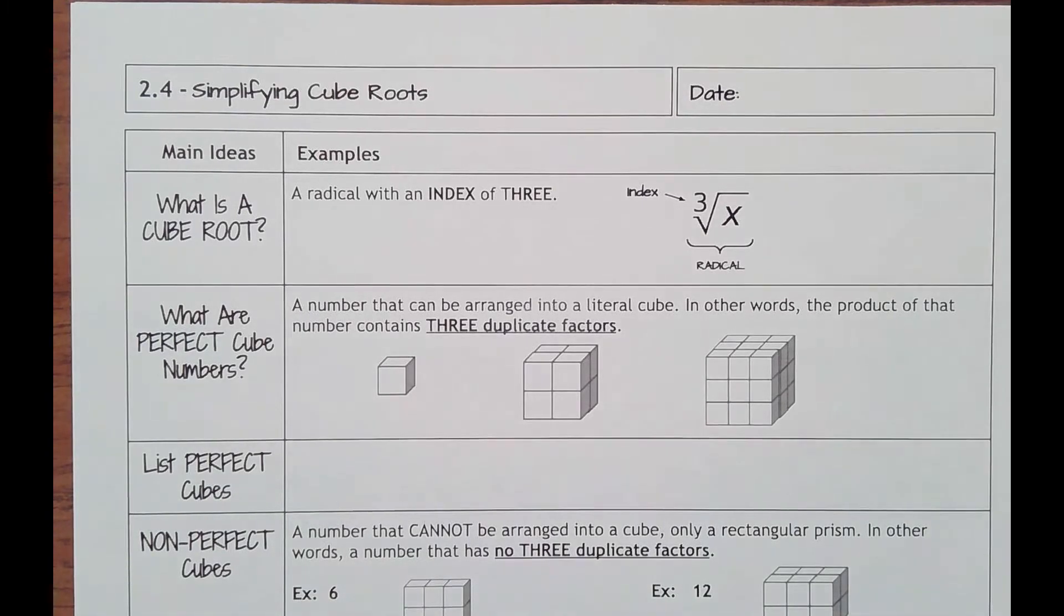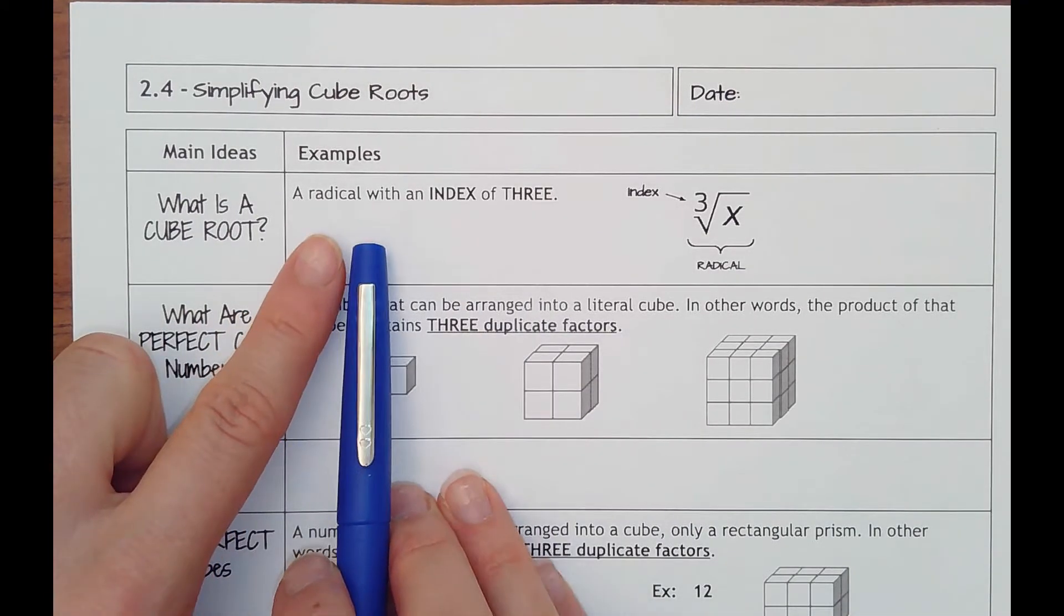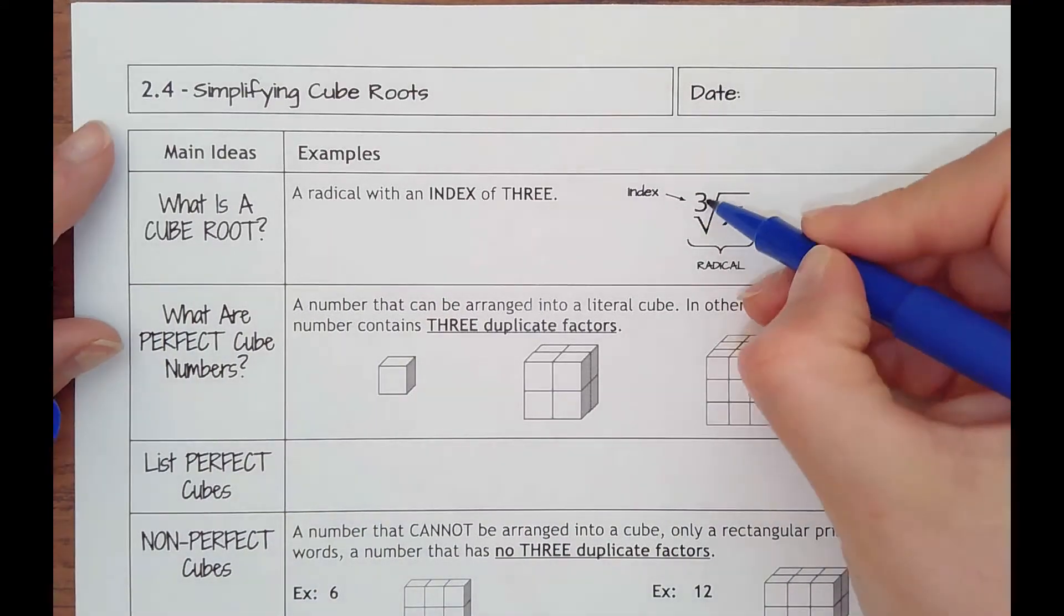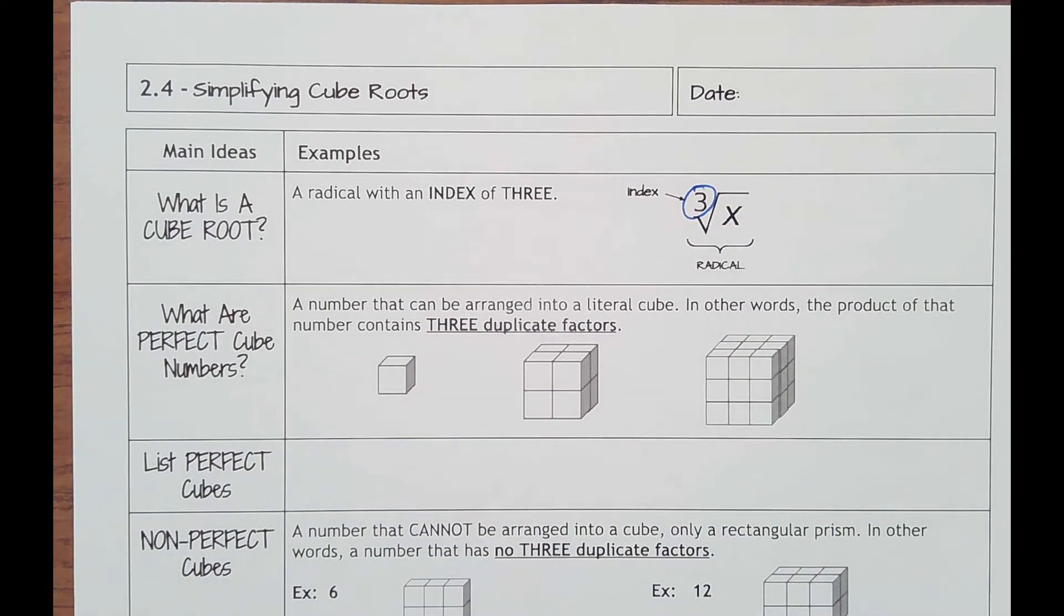Lesson 2.4 simplifying cube roots. So we went from square roots to now cube roots. What is a cube root? Well, it's a radical that has an index of three, so you'll see this little number here.